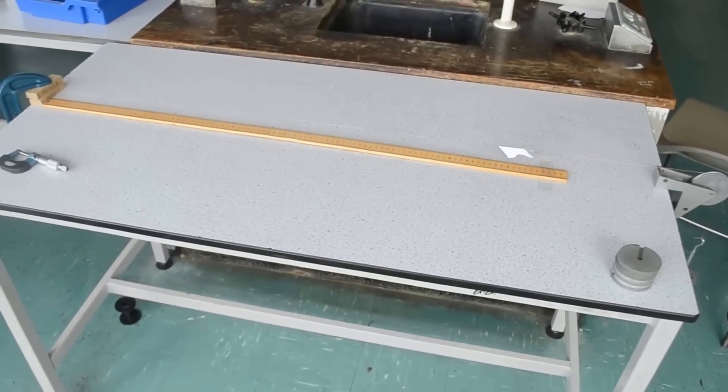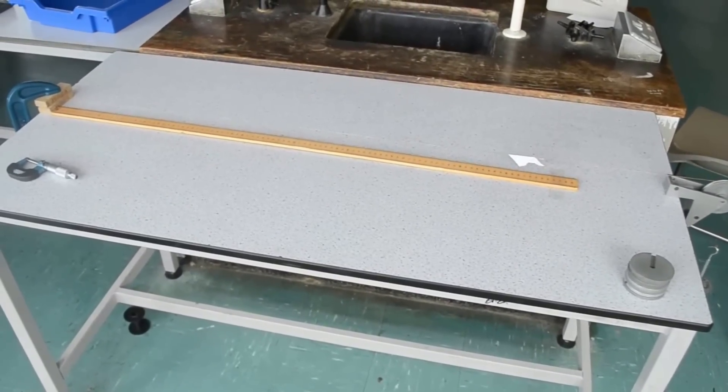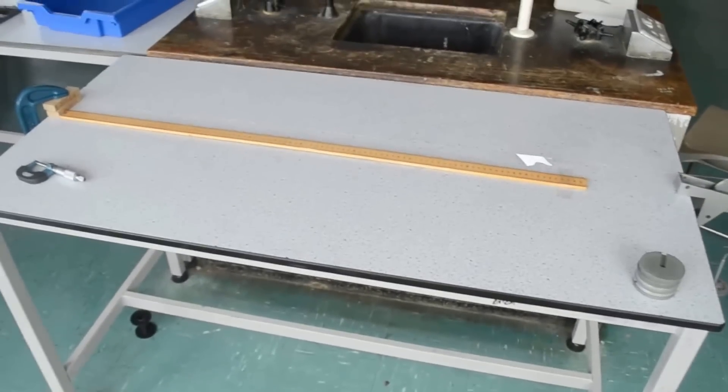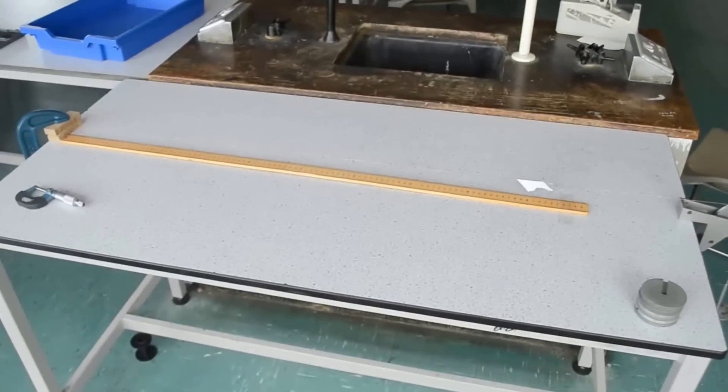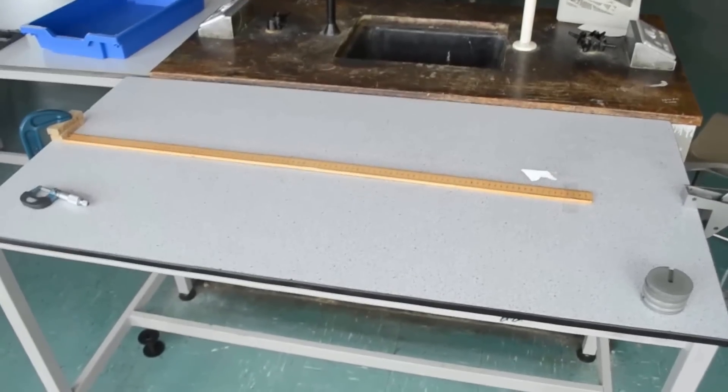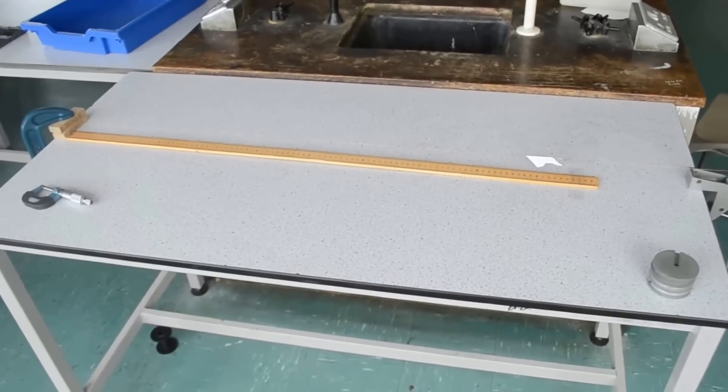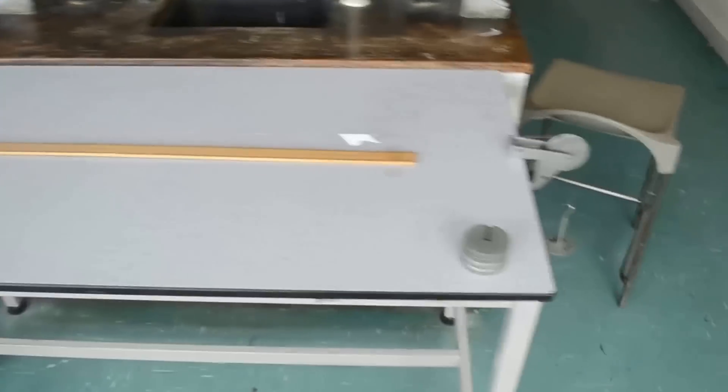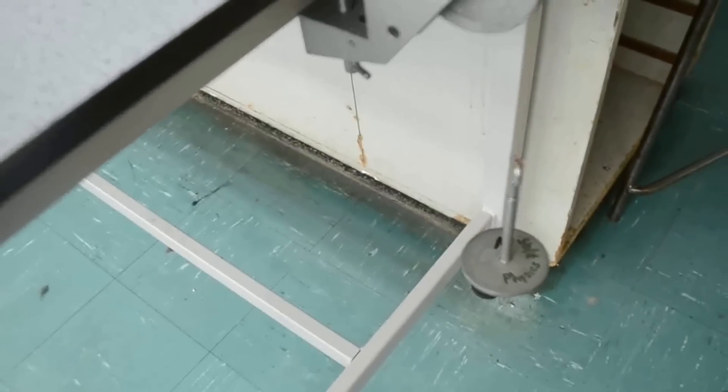In order to determine the Young modulus we're going to plot a graph of stress against strain and to measure stress and strain you need force, cross-sectional area, original length and extension. So let's begin with force, that will be measured by multiplying the mass on the hanger by 9.81.